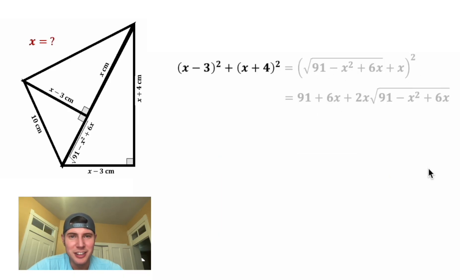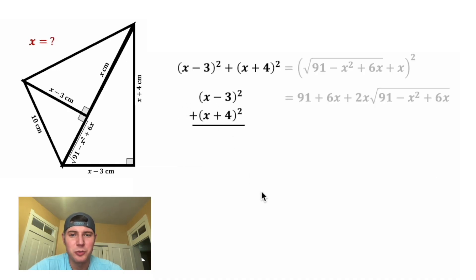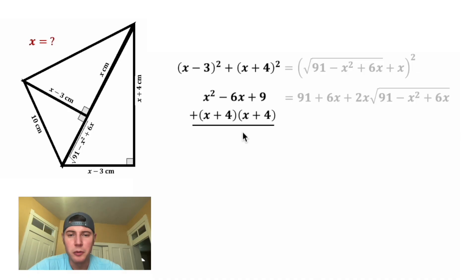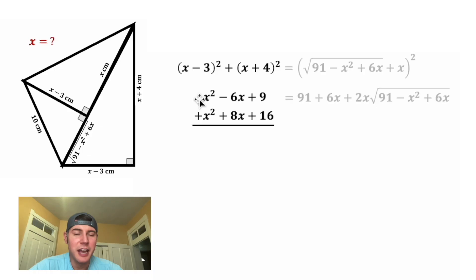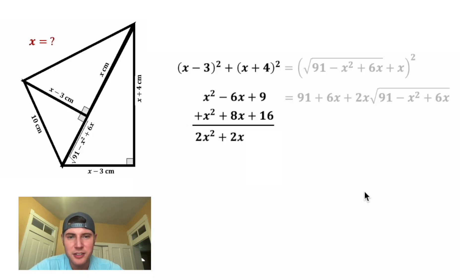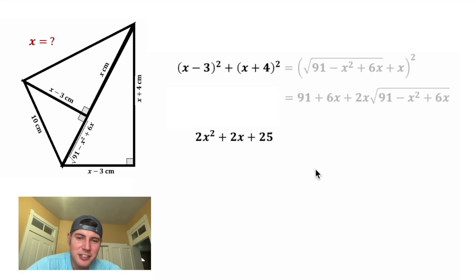Now let's focus on the left-hand side: (x minus 3) squared plus (x plus 4) squared. Expanding (x minus 3) squared gives x squared minus 6x plus 9, and expanding (x plus 4) squared gives x squared plus 8x plus 16. Adding these together: x squared plus x squared is 2x squared, negative 6x plus 8x is 2x, and 9 plus 16 is 25. So the left-hand side is 2x squared plus 2x plus 25.